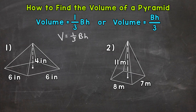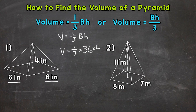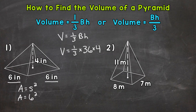Once we have that, we can plug in. Volume equals 1 third times the area of the base. We have a square, so we can do 6 times 6 to calculate the area of that base. 6 times 6 gives us 36, times the height of 4. We were able to calculate that area using mental math, but don't be afraid to work to the side for more difficult problems. For example, we could write: area equals side length squared, plug in 6 squared, which means 6 times 6, giving us an area of 36 square inches.